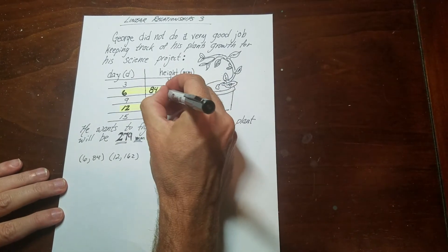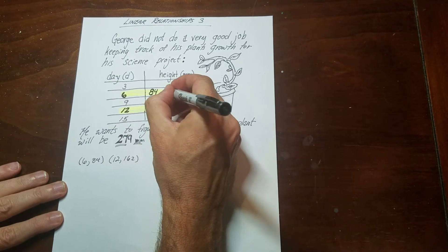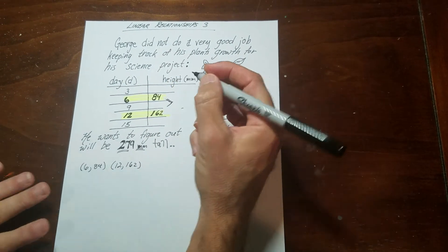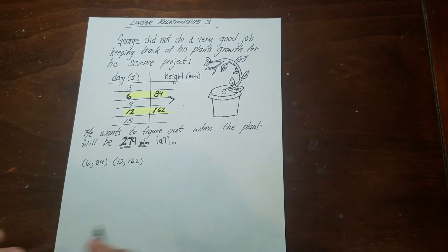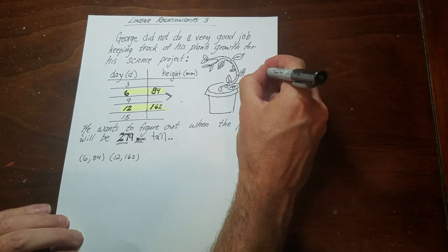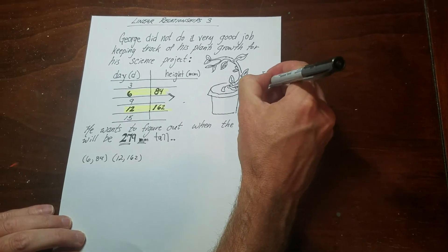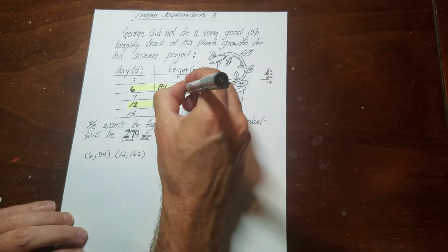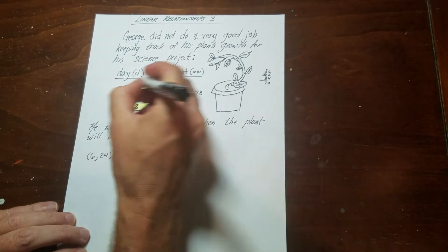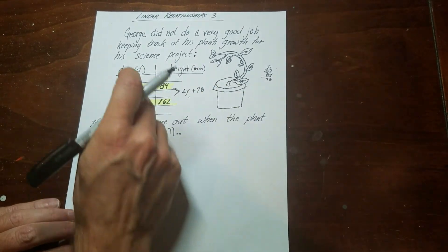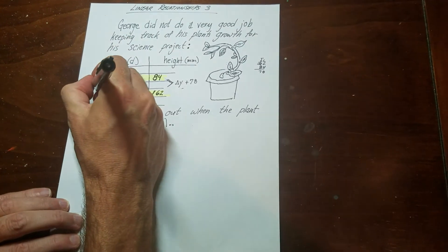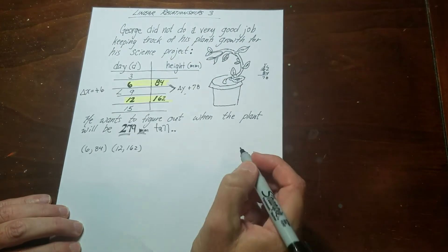And so what you normally do is you just do the delta y, delta x to find the slope. So I'm going to do that here. So from 84 to 162, so I'll do 162 minus 84. And I get 8. That's 78. So it looks like it went up 78. And then it went from 6 to 12. So it looks like my delta x went up 6.